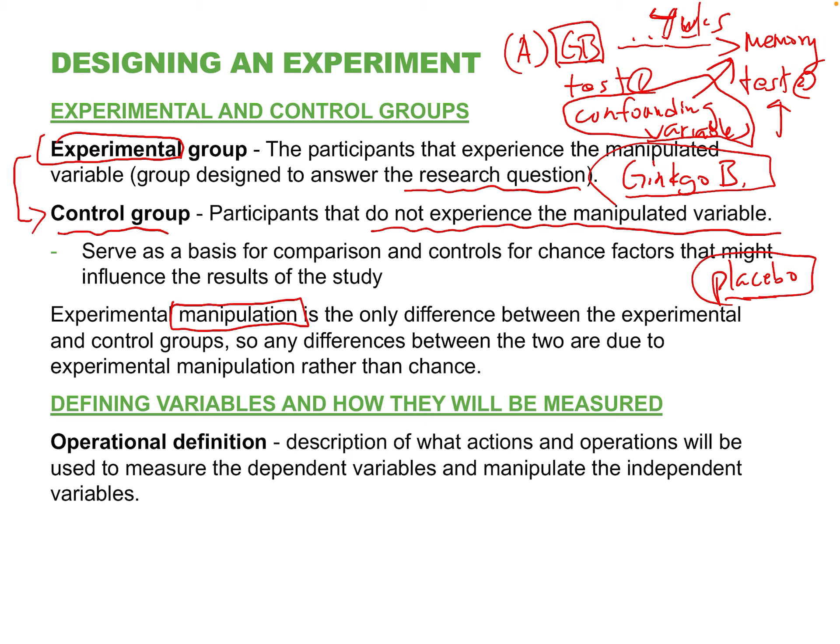Think of an experiment as more active for the researcher — there's active intervention and active control. So here's a key term: we're going to gather a group of volunteers, put them into groups, give one group ginkgo biloba, not give it to the other, and maybe give a third group a fake pill that looks like ginkgo.